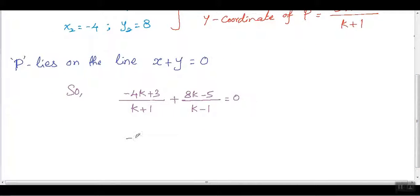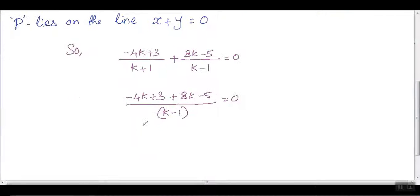Now simplify this. Since we have a common denominator, just combine the numerators: (-4k + 3 + 8k - 5) divided by (k + 1) equals zero. If you move the denominator term (k + 1) to the right-hand side, it becomes zero, so we get -4k + 3 + 8k - 5 equals zero.